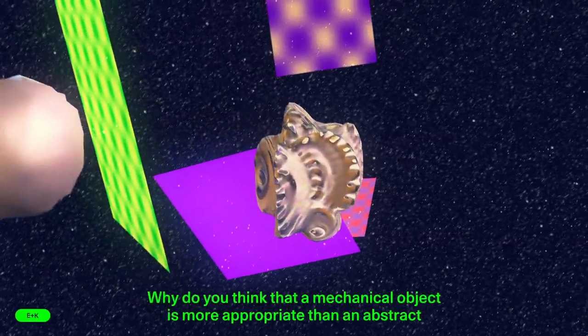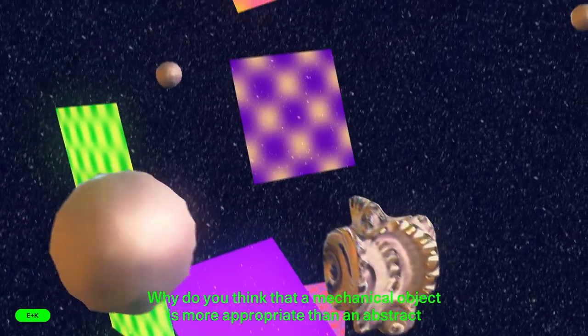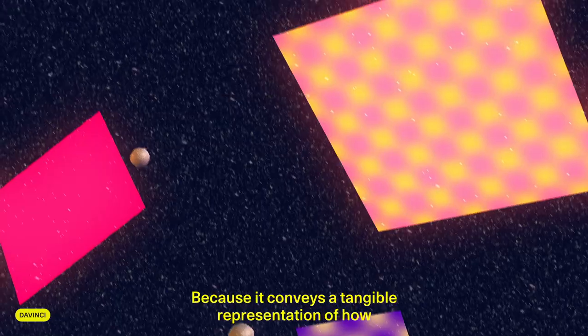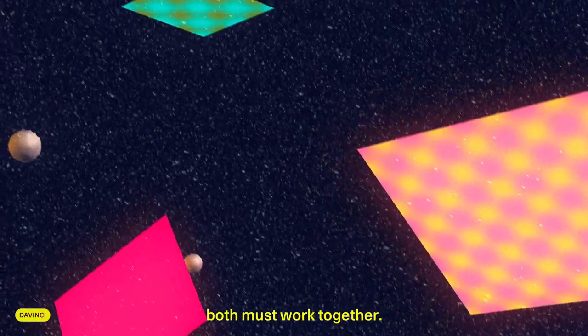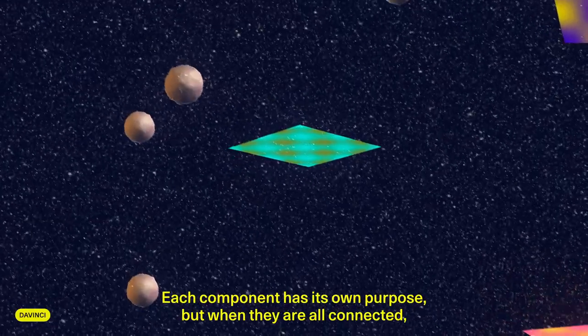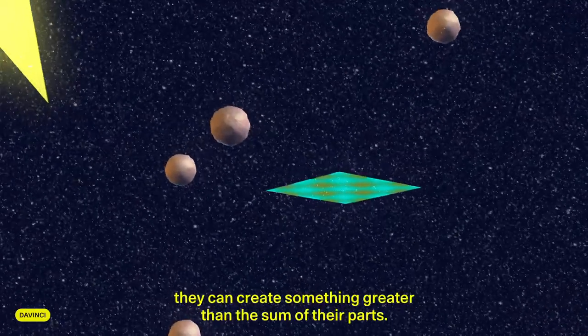Why do you think that a mechanical object is more appropriate than an abstract symbol to figure this interaction? Because it conveys a tangible representation of how both must work together. Each component has its own purpose, but when they are all connected, they can create something greater than the sum of their parts.